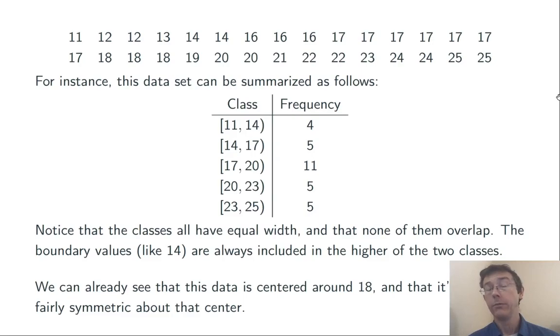Here, just by looking at the frequency distribution, I can already get a little bit of a feel for the shape of my data. The center is around 18, somewhere in the 17 to 20 class. There's a big spike there, and then the rest of the data is relatively symmetric about that spike.